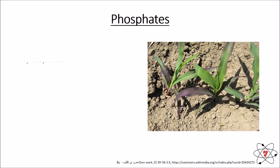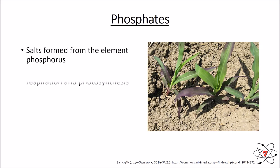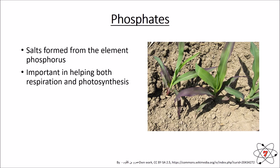Phosphates are another key group. Phosphates contain, unsurprisingly, phosphorus, and phosphorus is incredibly important both for respiration and photosynthesis. Without phosphorus, neither of these processes can really occur very efficiently or very well, and if there's no photosynthesis or less photosynthesis then obviously the plant is going to have less glucose.